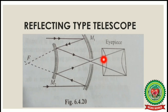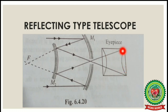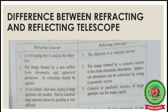just outside a hole passing through the vertex of the concave mirror. The real image can be seen through the eyepiece. This arrangement increases the focal length of the objective and hence the magnifying power is also increased. I hope you have understood the construction of the reflecting type telescope.